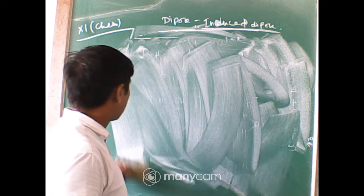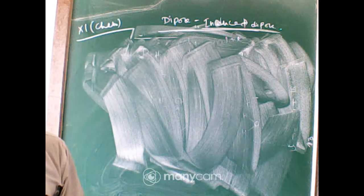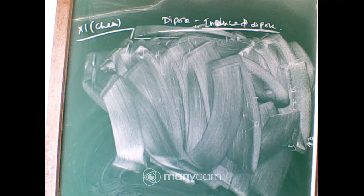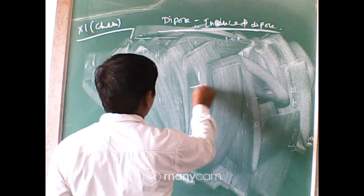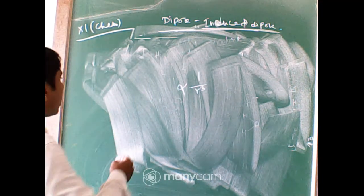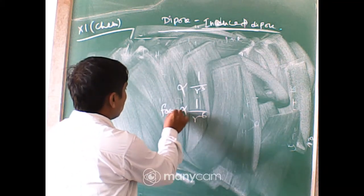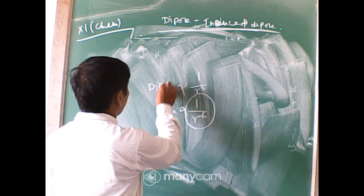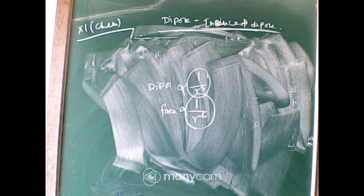To summarize, the five types of intermolecular forces are: dipole-dipole interaction, dipole-induced dipole interaction, ion-dipole interaction, instantaneous dipole (London force), and hydrogen bonding. For dipole-dipole and hydrogen bonding, force is proportional to 1/r³. For instantaneous dipole (London force), the force is proportional to 1/r⁶, where r is the internuclear distance.